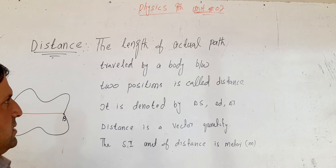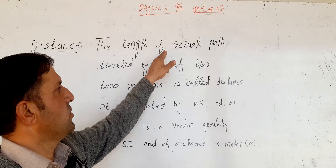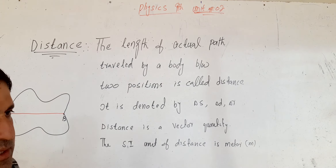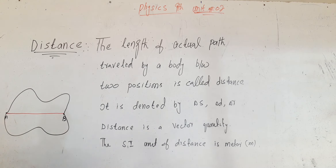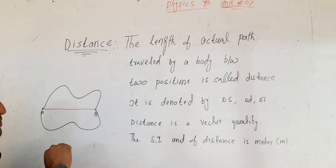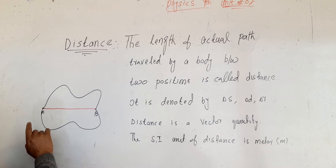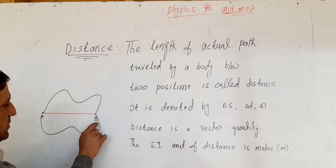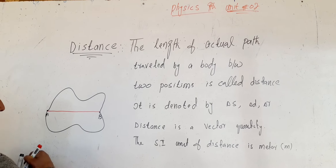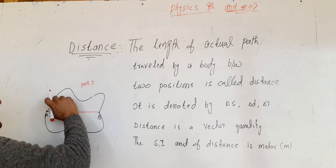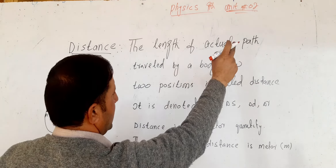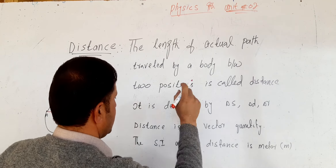Distance: The length of the actual path traveled by a body between two positions is called Distance. For example, from position A to position B — if you take path number 1, the length of that path is the distance.